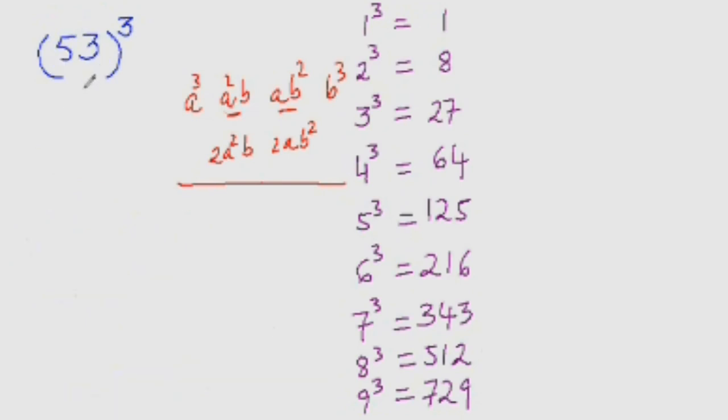So let's take another example and try to find its cube. What is 53 cube? So A cube is 5 cube that is 125. Now A square B, that is 5 square is 25, 25 times 3 is 75.